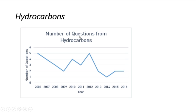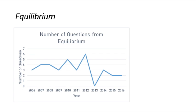In the topic of hydrocarbons, around two questions have been asked in the past two years, whereas a maximum of five questions were asked in 2006 and 2012. There is a linear reduction in the number of questions from 2016 to 2009, though the difficulty level of these questions has increased. In equilibrium, you can see great fluctuation — in 2013 nothing was asked, but in the last two years two questions have been asked.